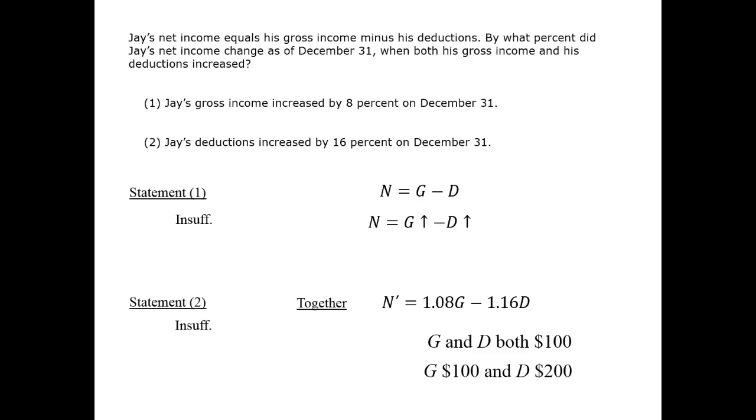On the other hand, if g were 100 and d were 200, the gain would be the same, but the loss doubled, for a different net loss. We have insufficient information to determine the change. Therefore, the correct answer is e.